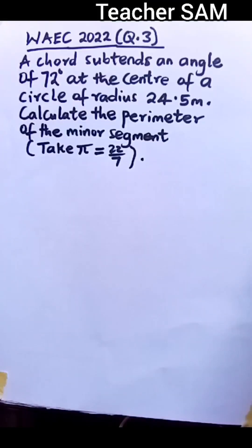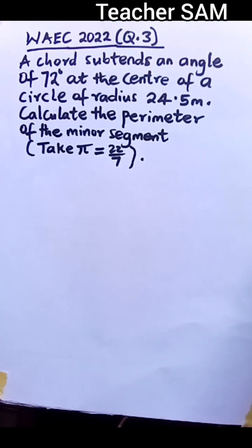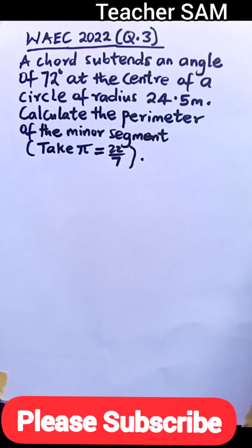Question 3. A chord subtends an angle of 72 degrees at the center of a circle of radius 24.5 meters. Calculate the perimeter of the minor segment. Take pi to be equal to 22 over 7.